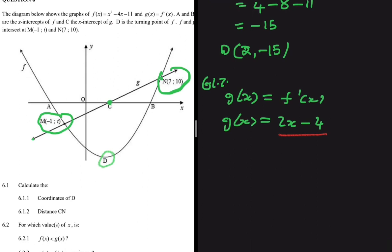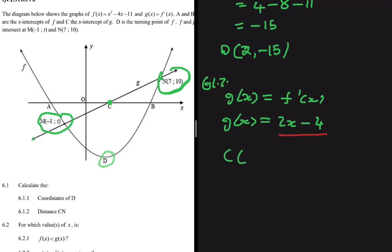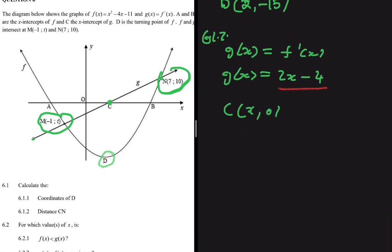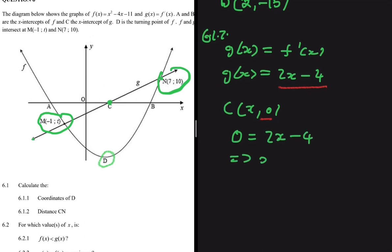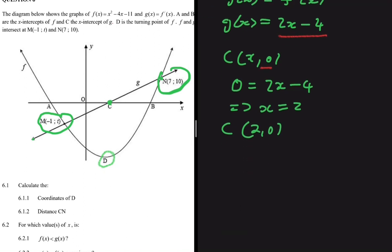So let's find the coordinates of C. For C, we have an unknown x coordinate and a y coordinate of zero. If we substitute y = 0 into g(x) = 2x - 4, it's easy to see that x = 2. So the coordinates of C are (2, 0).